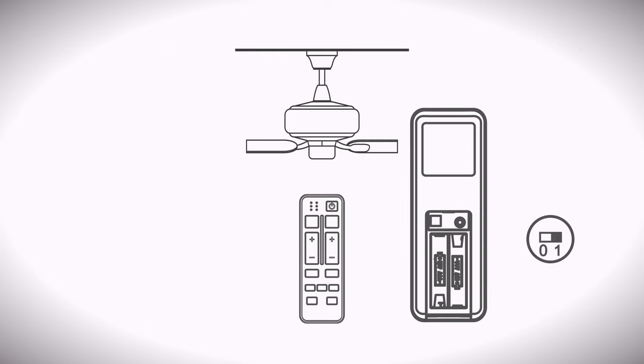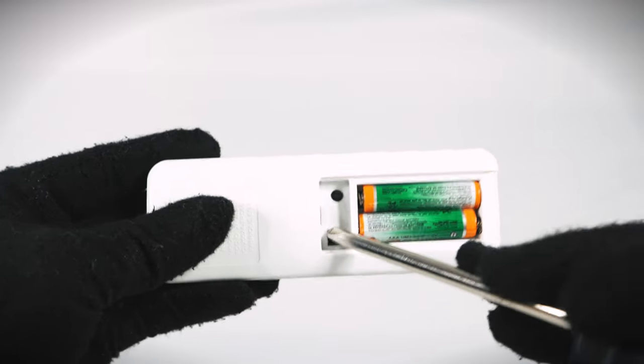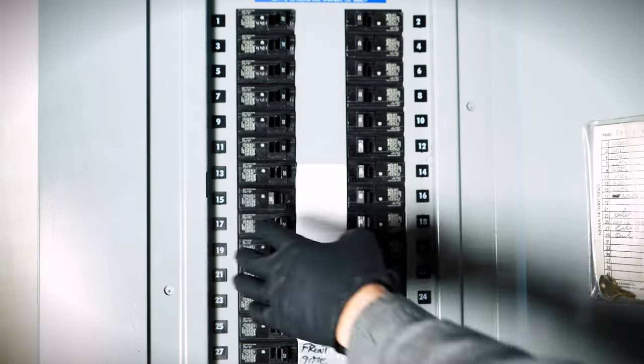If you are experiencing issues with the fan, or want to set the fan to universal operation mode again, you can factory reset the fan's programming. First, set the dip switch to the zero position. Next, turn off power to the fan for a few moments, then restore power.